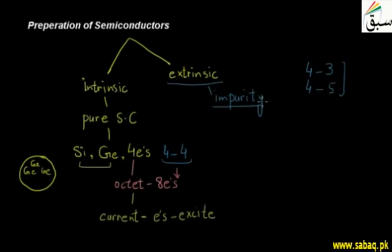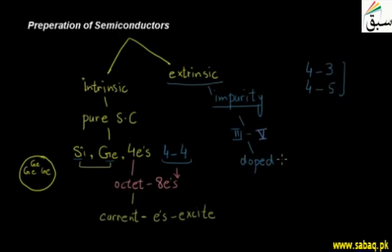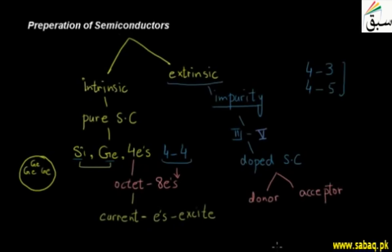So, if we have elements combined with germanium or silicon which are from the third or fifth group in the periodic table — meaning the valence electrons in the outer shell are three or five — and we add these as impurities to the semiconductor, then we say that this semiconductor is a doped semiconductor. This method of adding impurities is called doping. In the doped semiconductor, one type is called a donor and the other is called an acceptor.